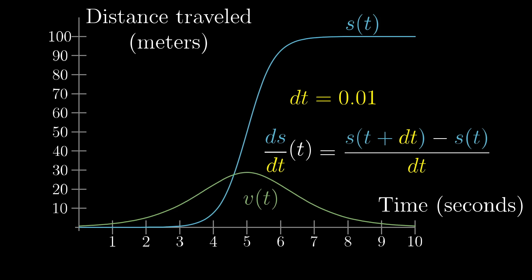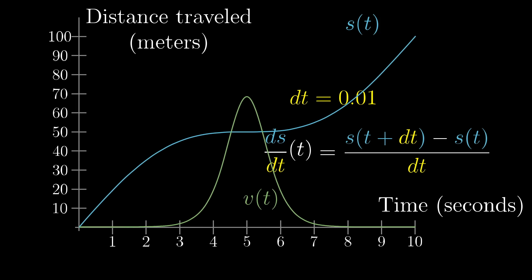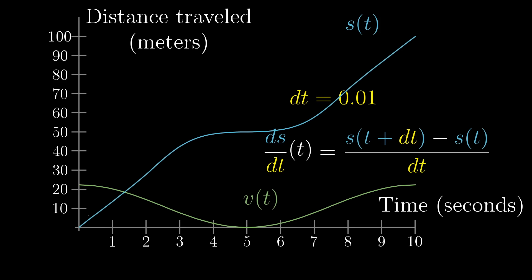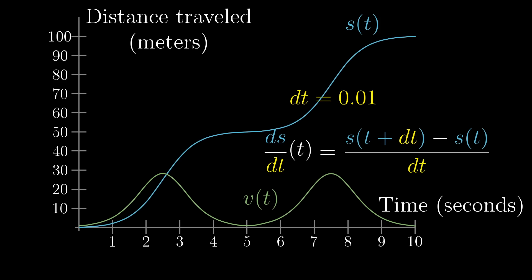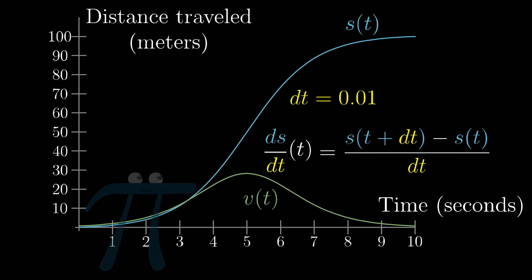So with a formula like this, you could give the computer any curve representing any distance function s(t), and it could figure out the curve representing velocity. So now would be a good time to pause, reflect, make sure that this idea of relating distance to velocity by looking at tiny changes makes sense, because what we're going to do is tackle the paradox of the derivative head on.